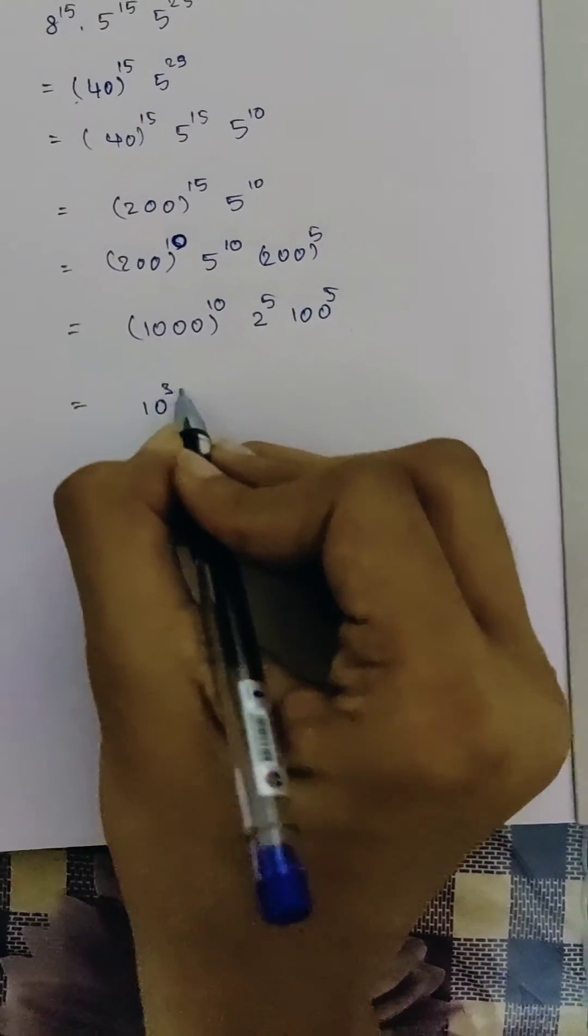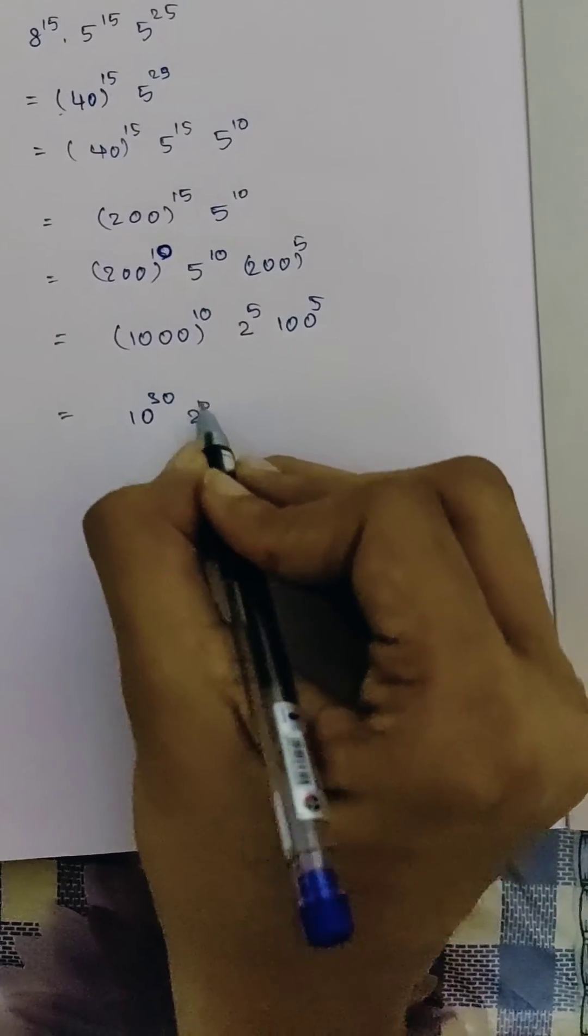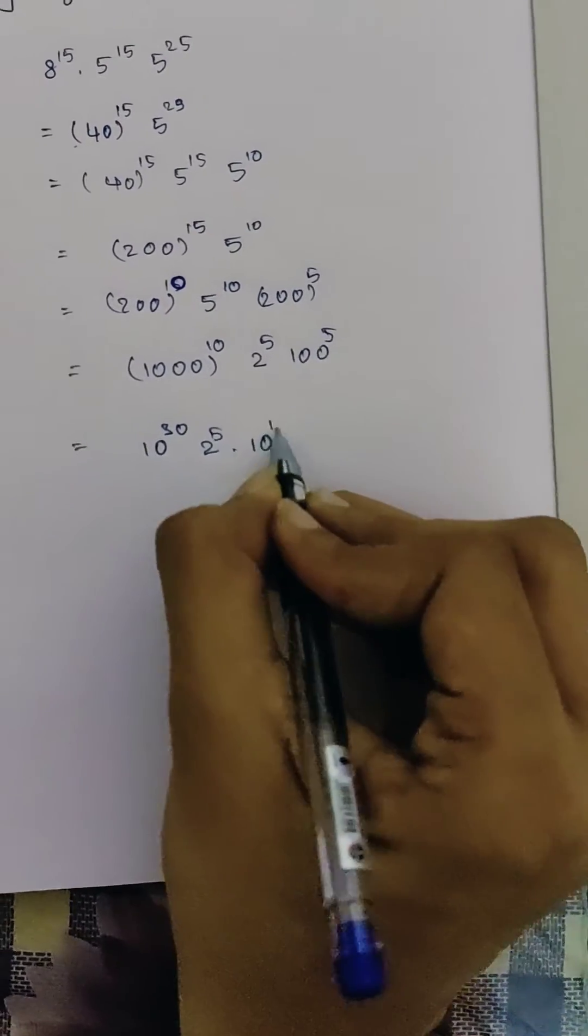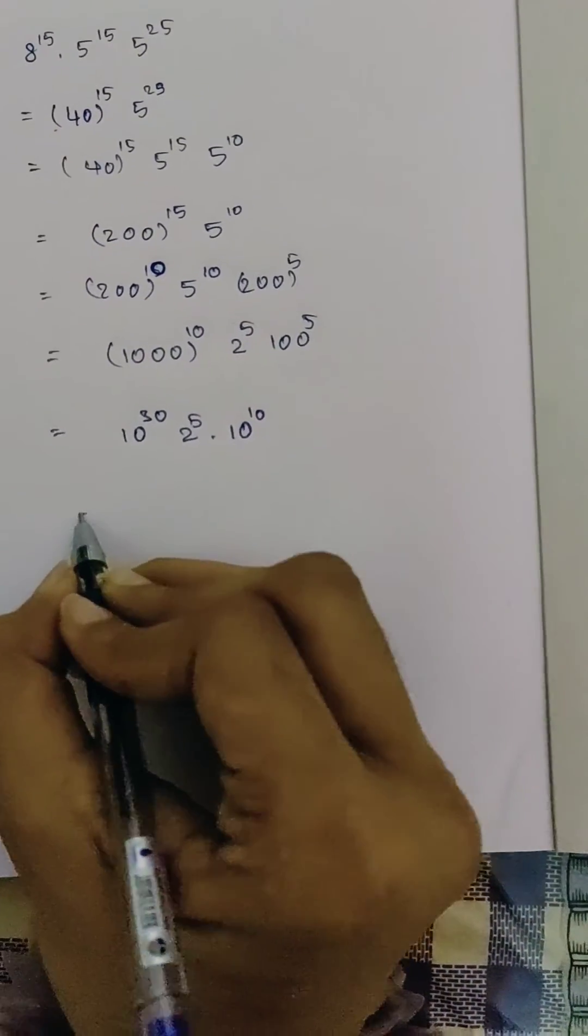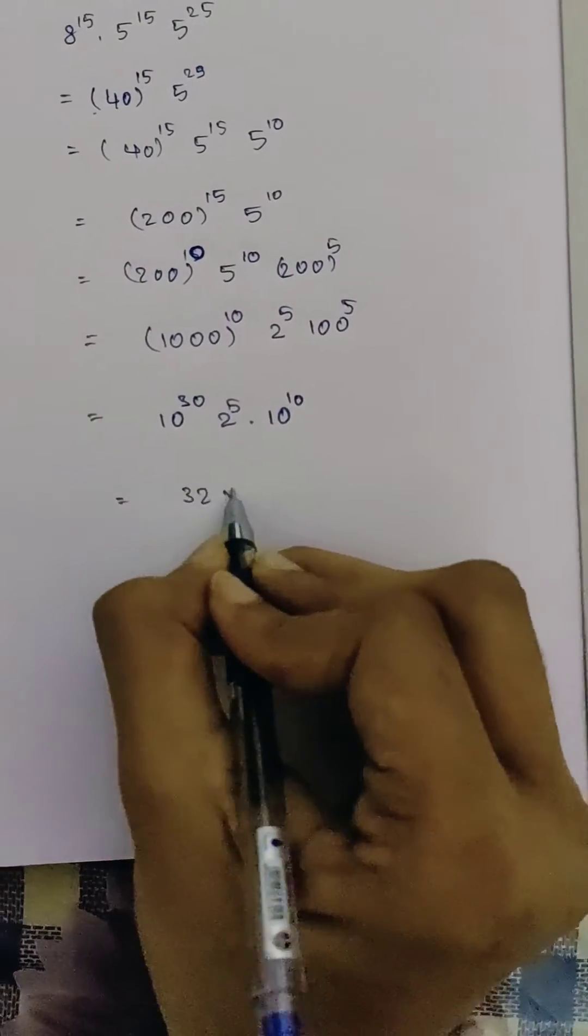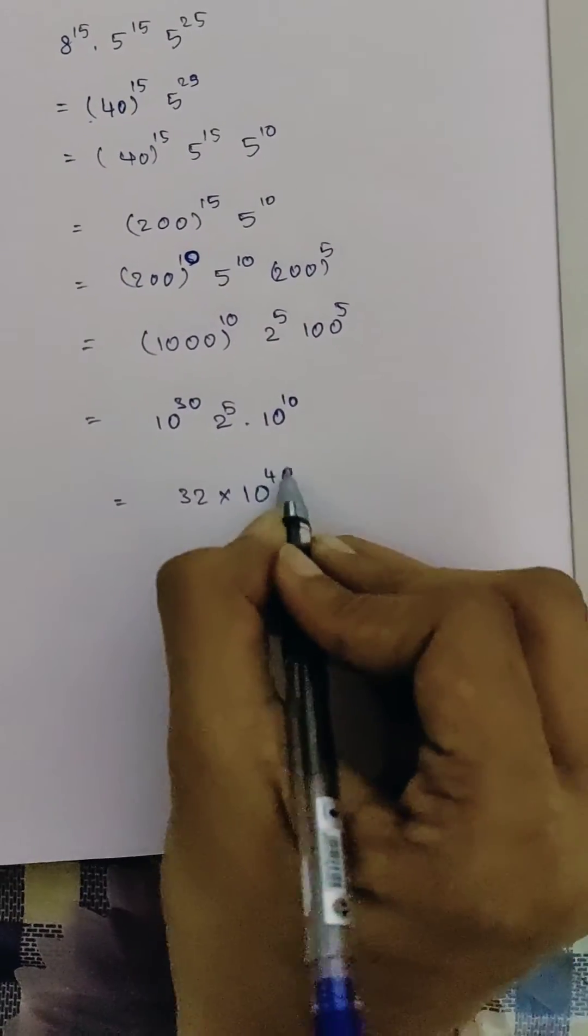We know 1000 is 10 cube. So it is 10 power 30 and 2 power 5 and 10 power 10. Now we can write it as 10 power 40 into 32, as 2 power 5 is 32.